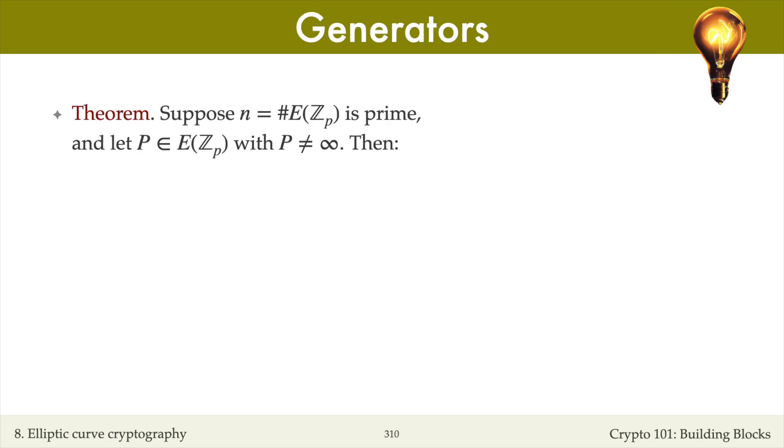We have the following theorem on point multiplication. Let P be any point on the elliptic curve except the point at infinity. Then n times P equals infinity.